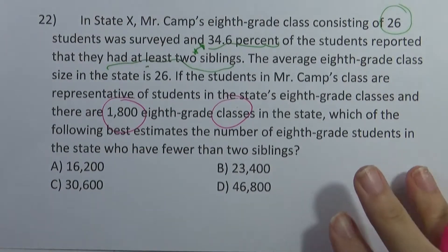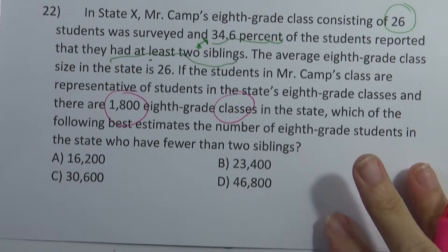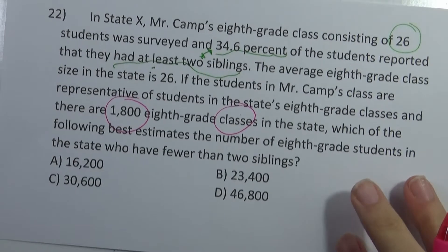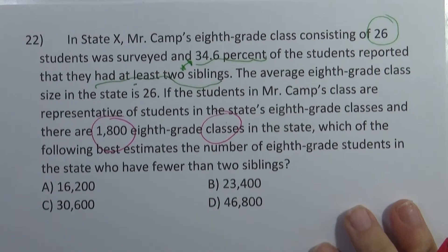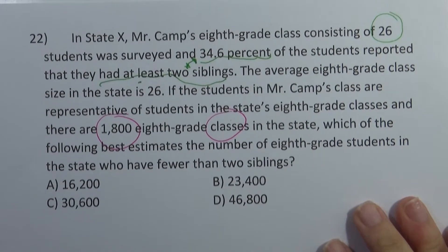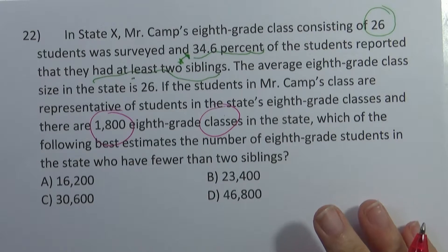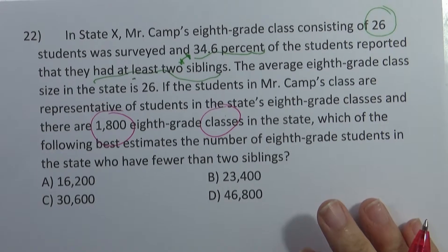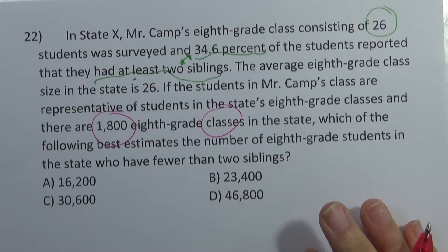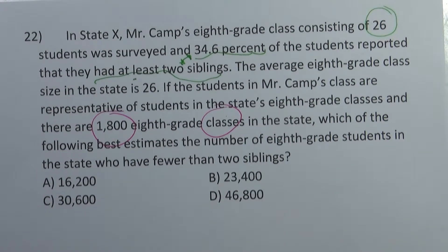Which of the following best estimates the number of 8th grade students in the state who have fewer than two siblings? The number of students in the state is about 34.6% — those are the ones who have fewer than 2 siblings.